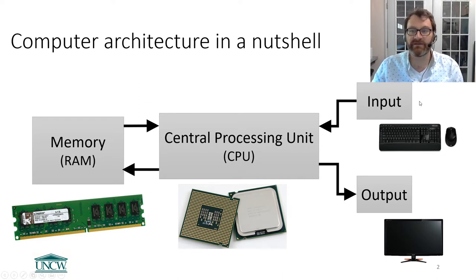You have the user input, be it keyboard, mouse, speech-to-text, what have you. And we have a central processing unit, and this is the brain of the computer. It's the little silicon chip. It's the thing that you pay a lot of money for when you buy your computer.